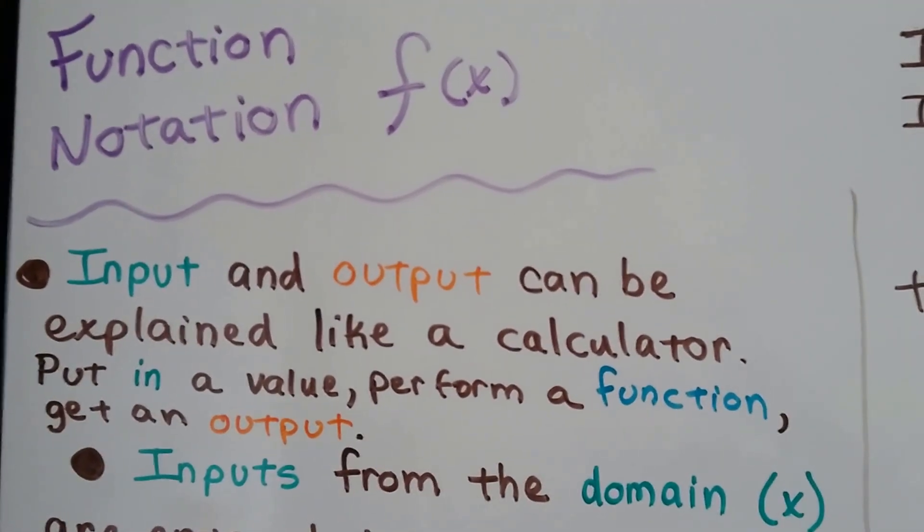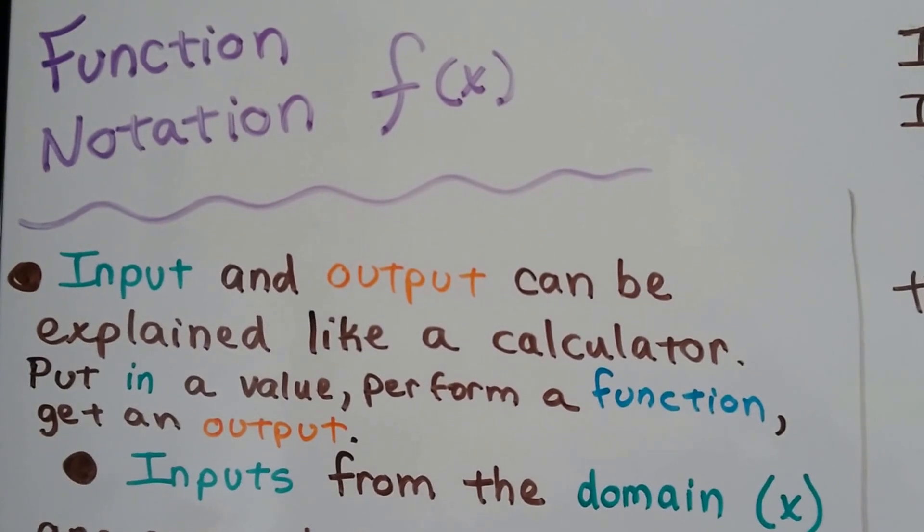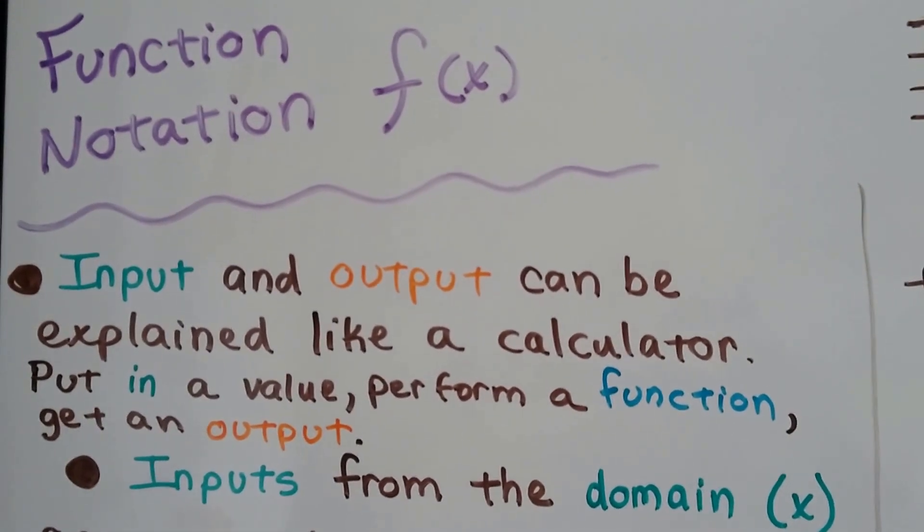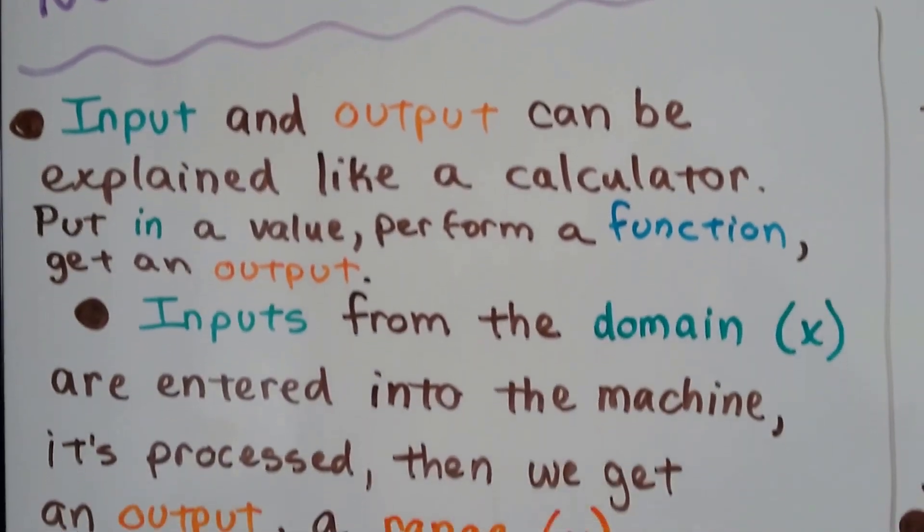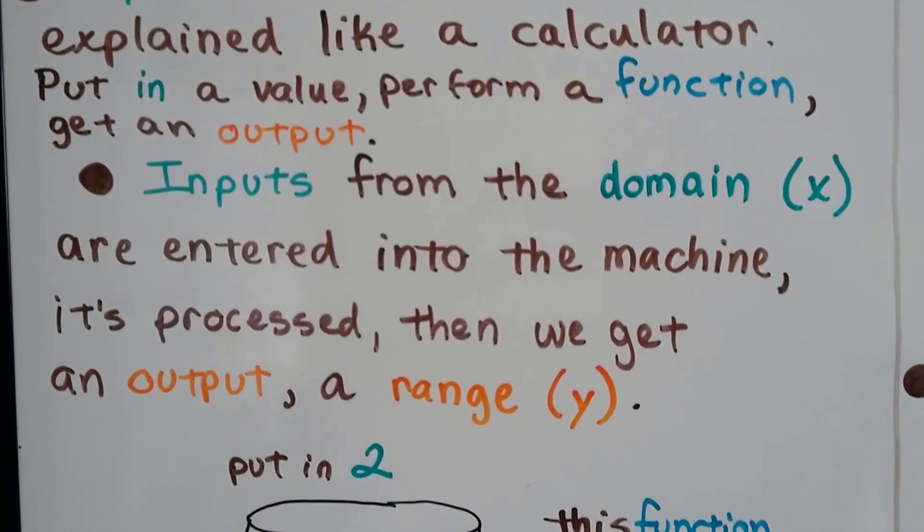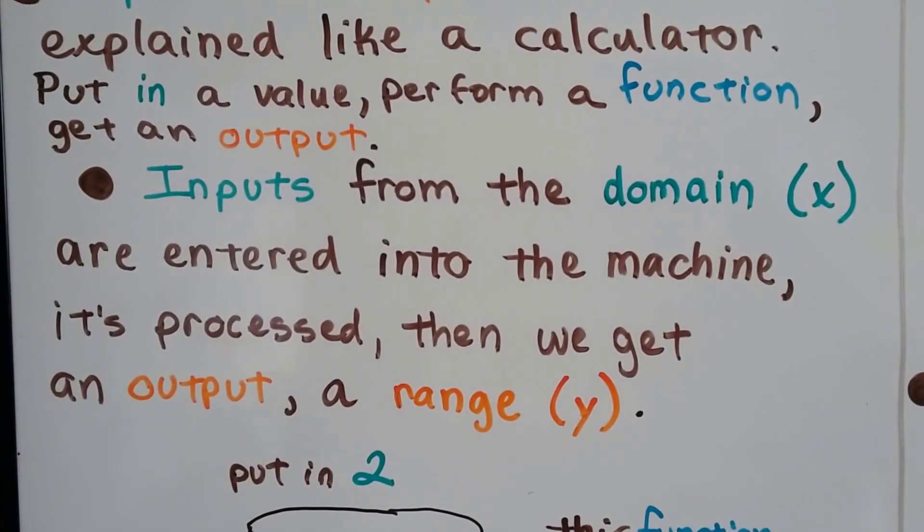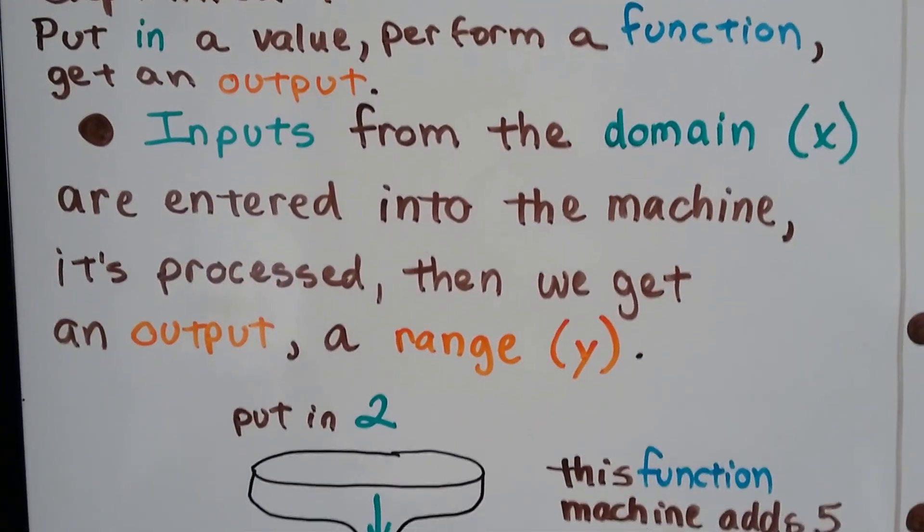Input and output can be explained like a calculator. You put in a value, it performs a function, and you get an output. Inputs from the domain, x, are entered into the machine, it's processed, then we get an output, a range, like y.